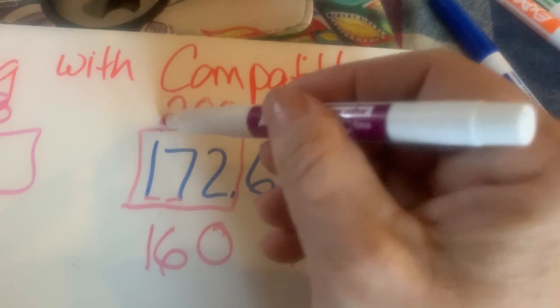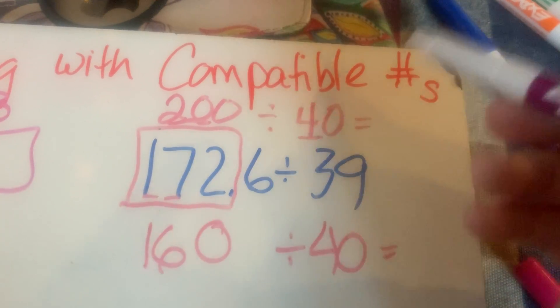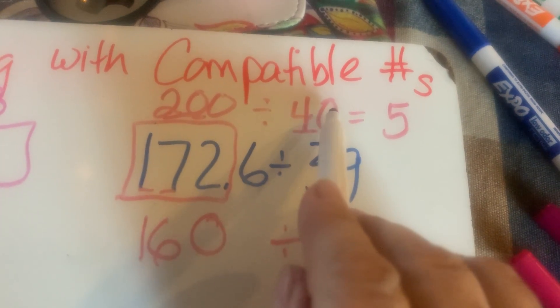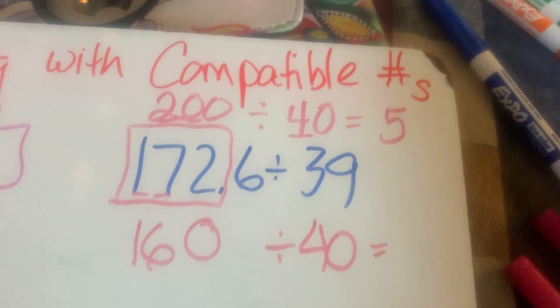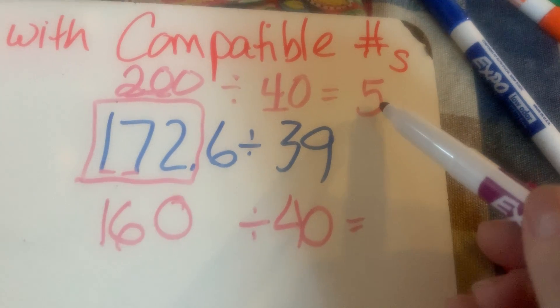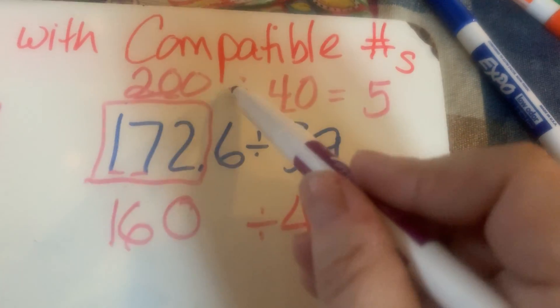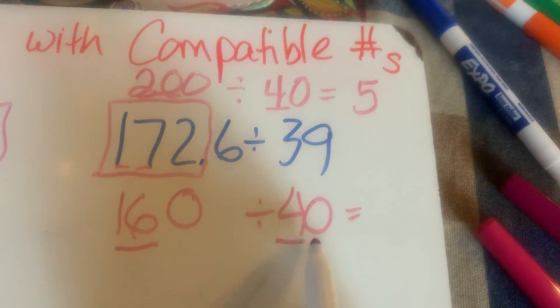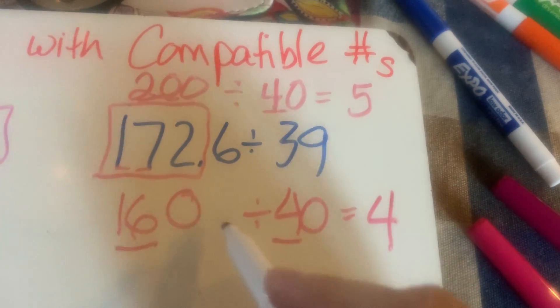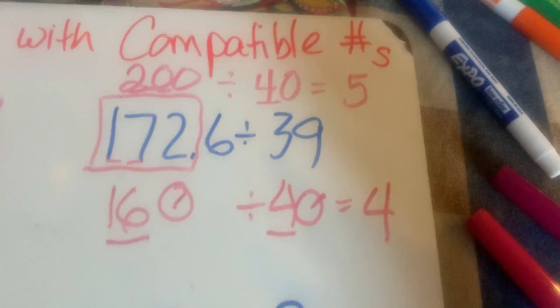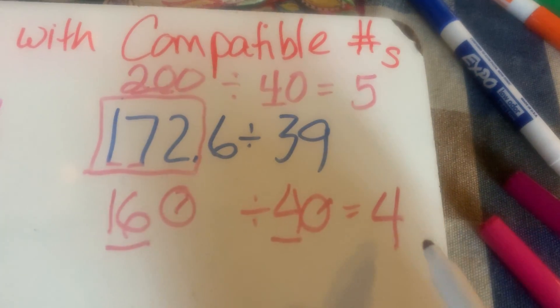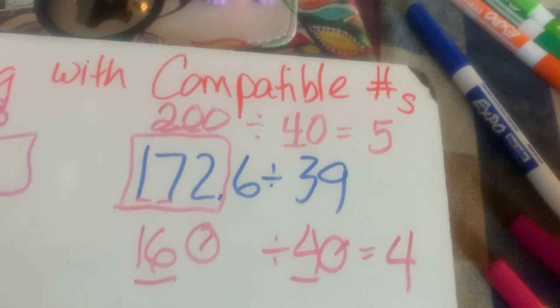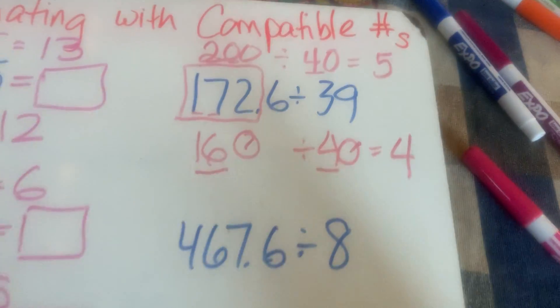So 200 ÷ 40 = 5. I know because there's a zero on each of these numbers they cancel each other out. To double check, 5 × 40 = 200. Then 160 ÷ 40: I know 16 ÷ 4 = 4, and I'm not adding a zero because there's one on each side so they cancel. To check: 4 × 40 = 160. Double digits don't scare me too much.